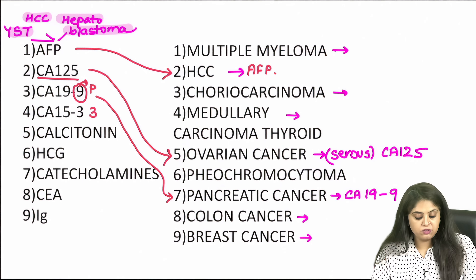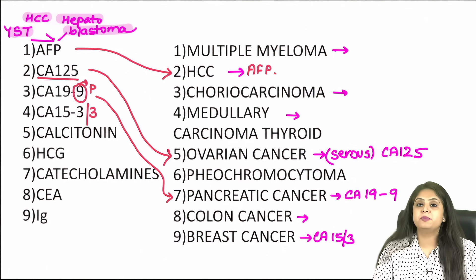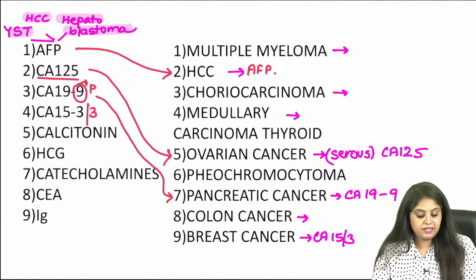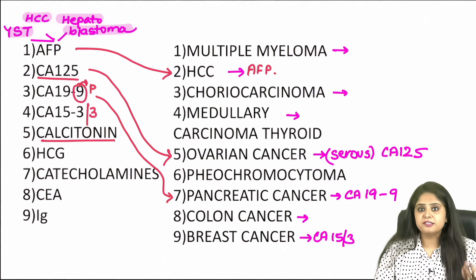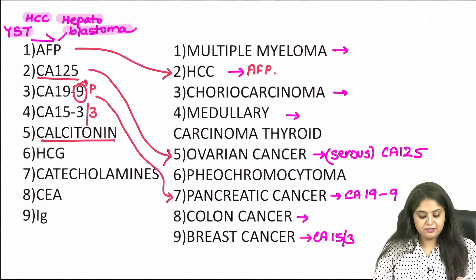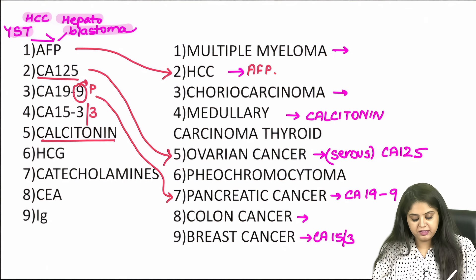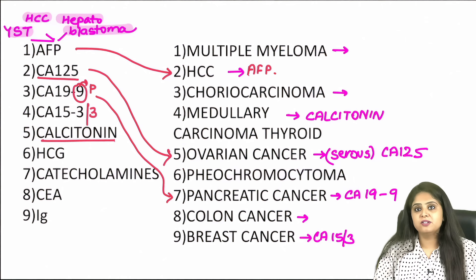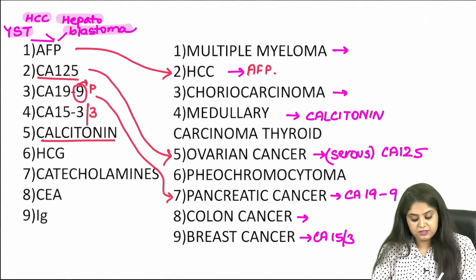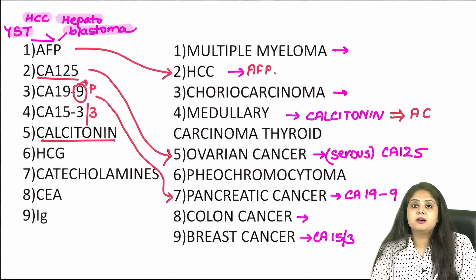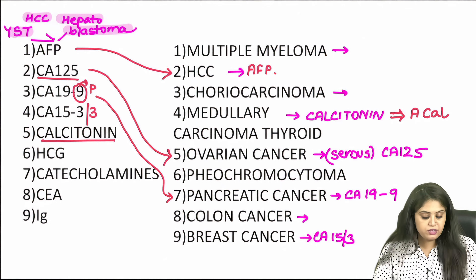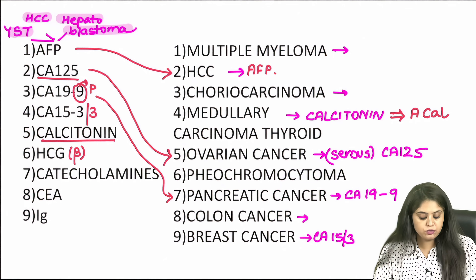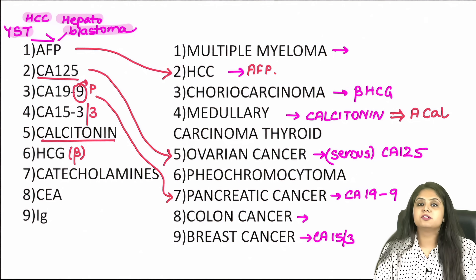The next one is CA-15-3 — convert the 3 into a B, so CA-15-3 is for breast cancer. Then calcitonin, which is normally made by the thyroid's parafollicular C cells, and any cancer arising from those C cells will make calcitonin — that is medullary carcinoma of the thyroid. This can result in amyloid formation known as A-cal, amyloid of the calcitonin type. Moving on, beta-HCG is the tumor marker for choriocarcinoma.